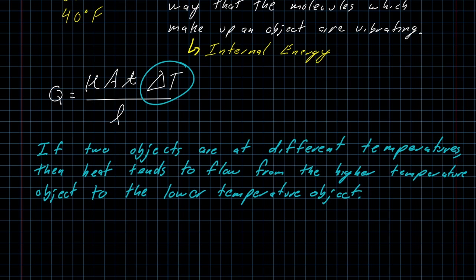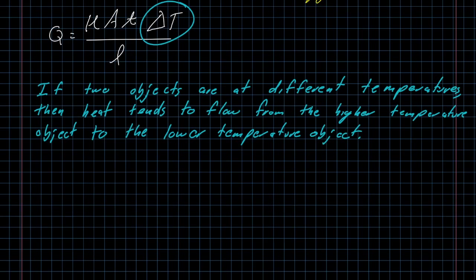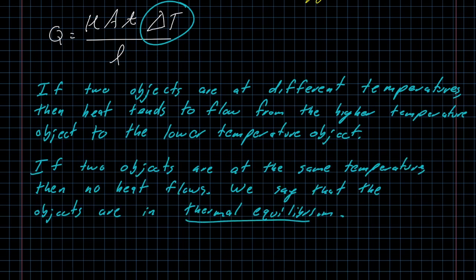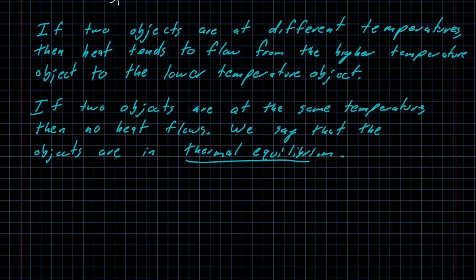That difference in temperature can in and of itself be used as a definition. In this definition, if two objects are at different temperatures, then heat tends to flow from the higher temperature object to the lower temperature object. If the two objects are at the same temperature, then there will be no heat flow. If delta T is zero, then zero times anything divided by anything else gives us zero and the heat flow is zero. If two objects are at the same temperature, no heat flows, we say that these objects are in thermal equilibrium.